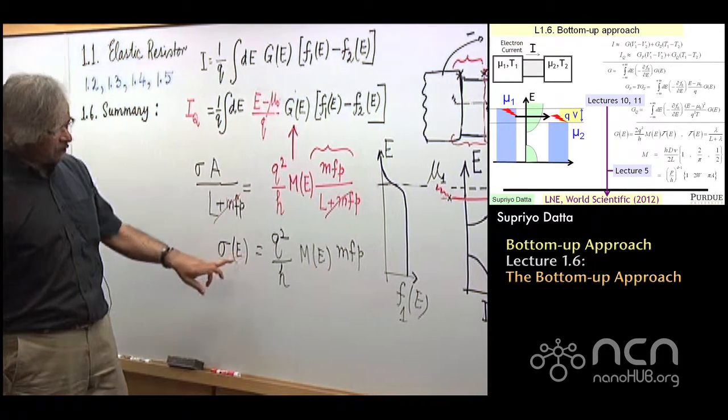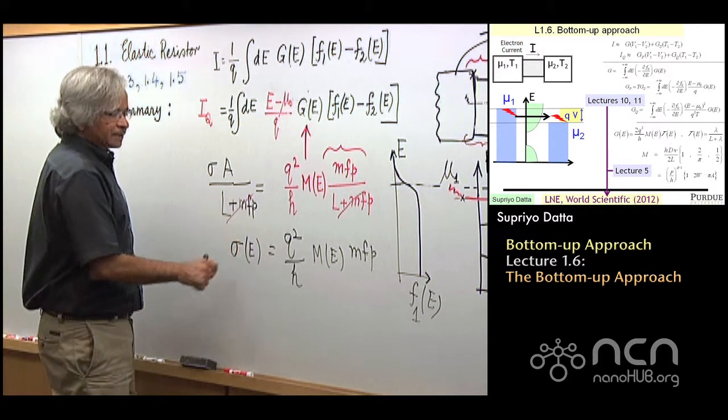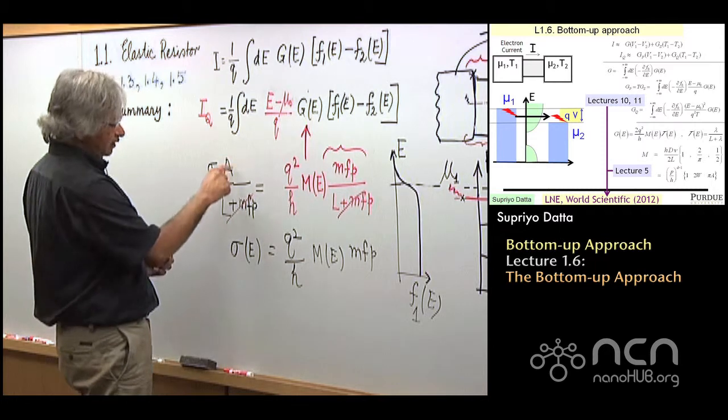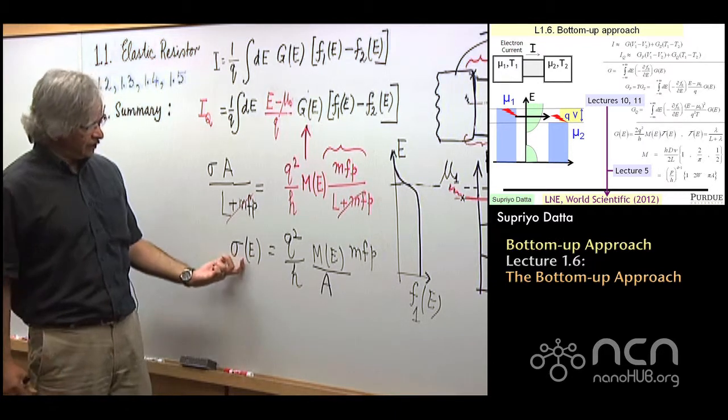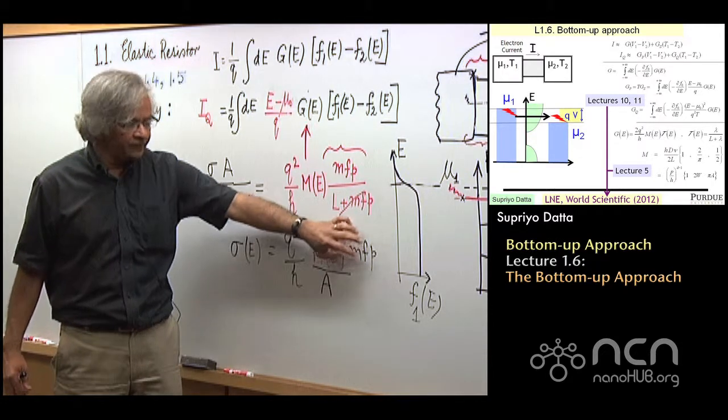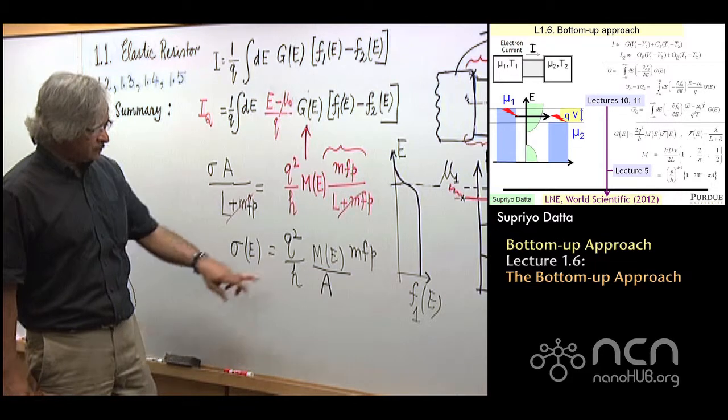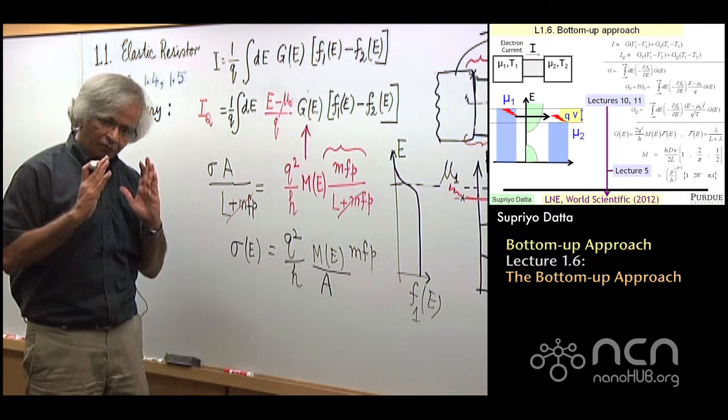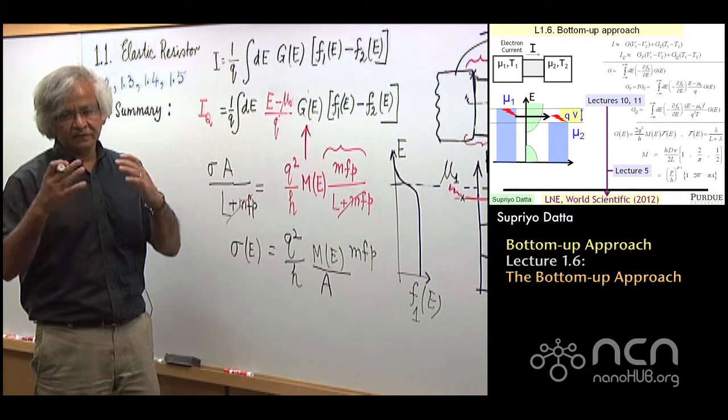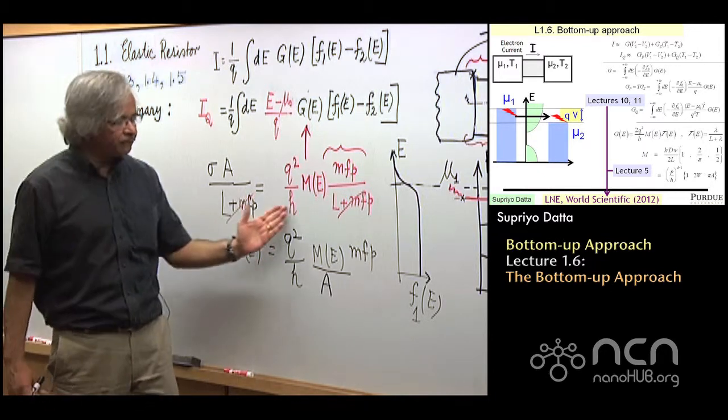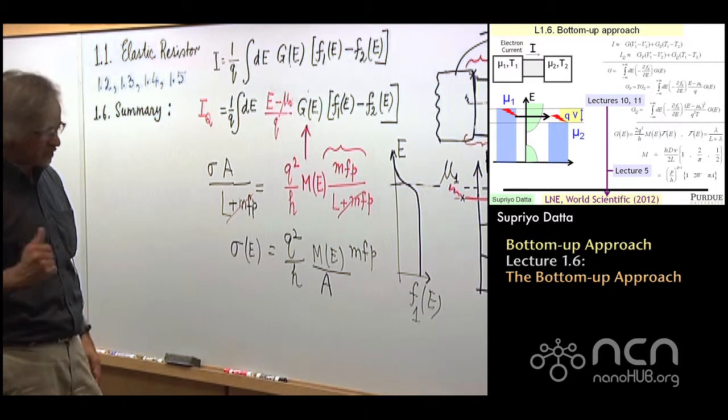The correct expression for sigma of E would be Q square over H times M of E times the mean free path. But if you didn't recognize this fact that small conductors have this interface resistance, you may not have written the mean free path here. You might have written L here, and then you would have got answers that wouldn't be right at all. But as long as you recognize this, you can extract an expression like this, and that would actually connect up very nicely with the standard expressions people obtain from Boltzmann equation. Those are things that Professor Lundstrom will be connecting up to next, in his week two lectures.